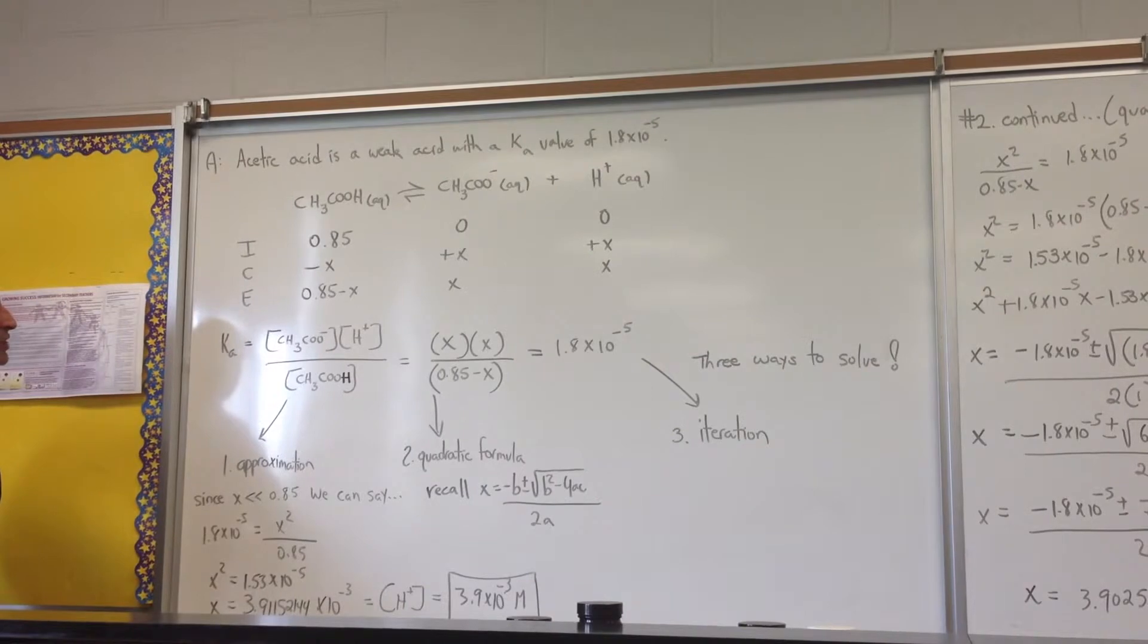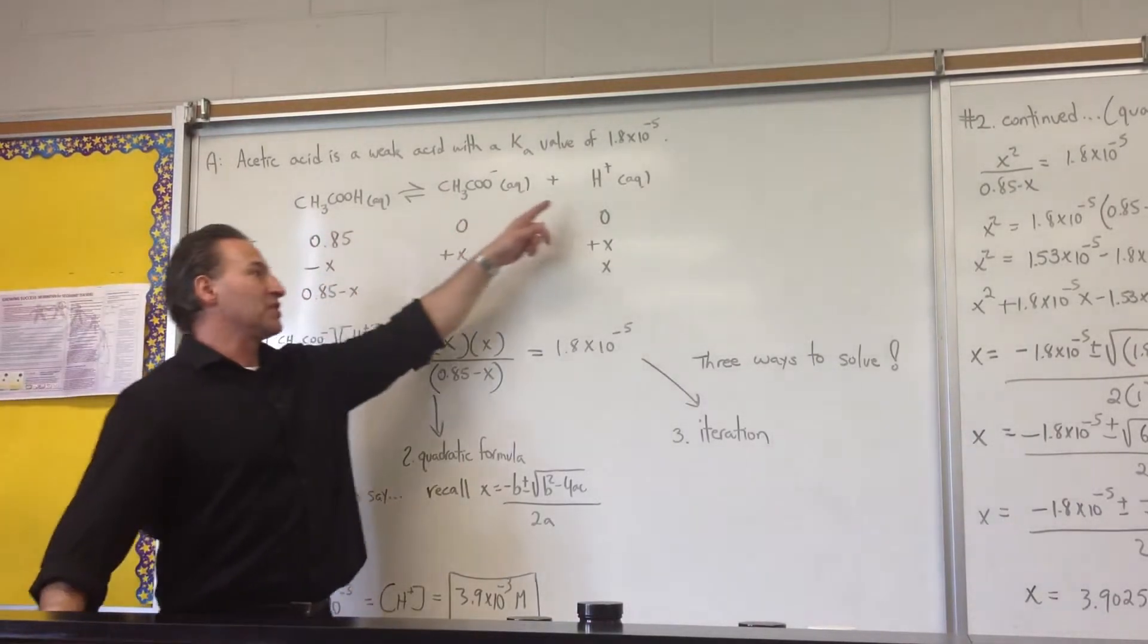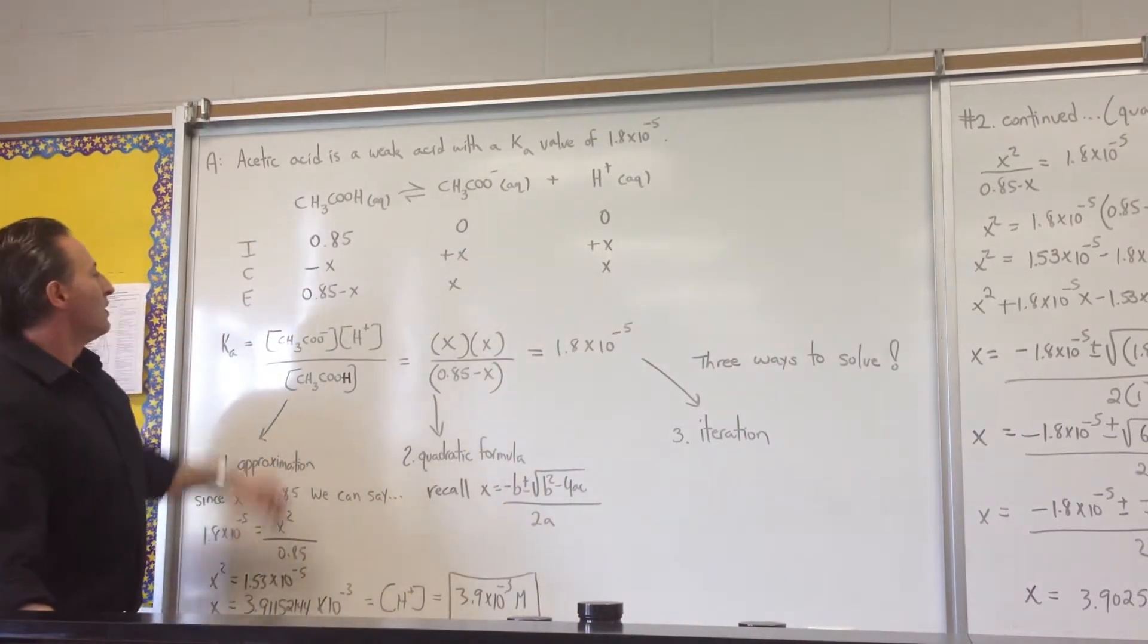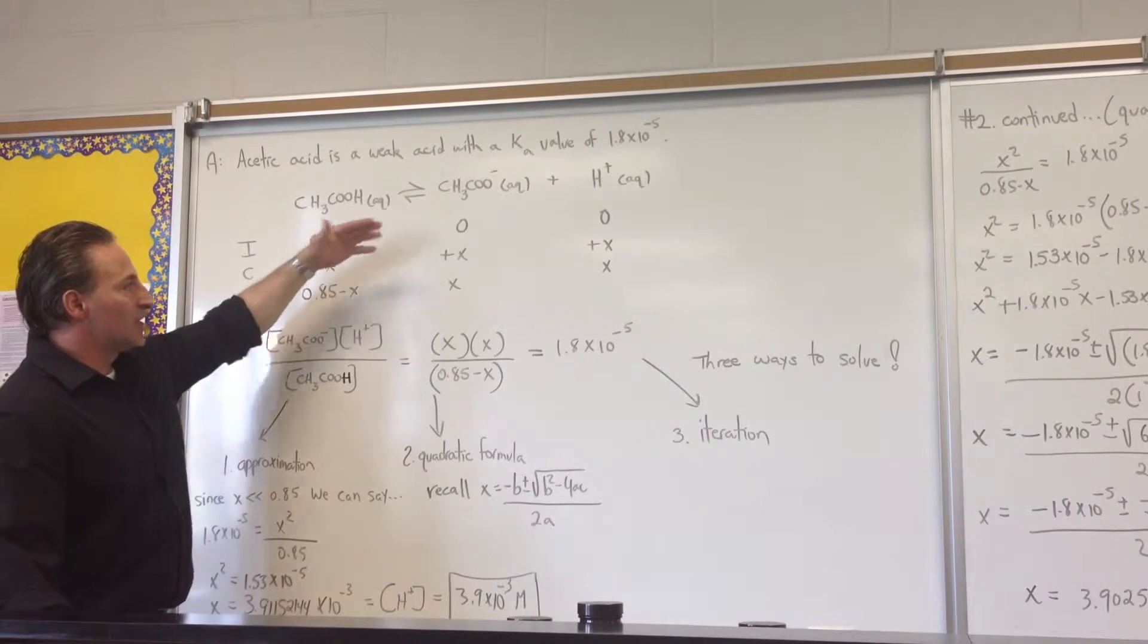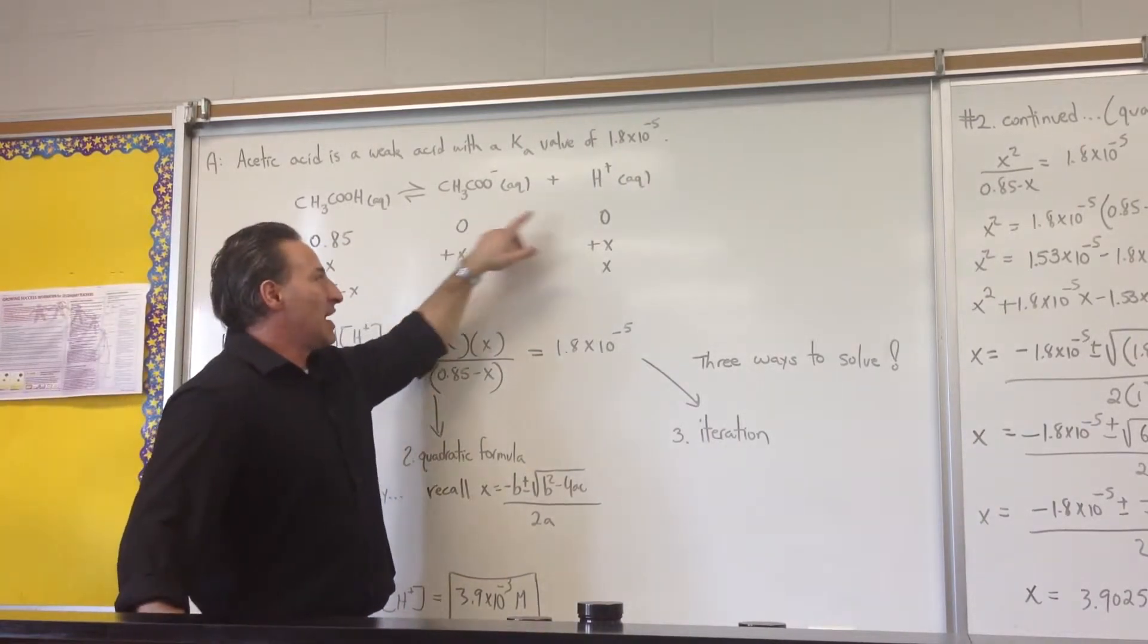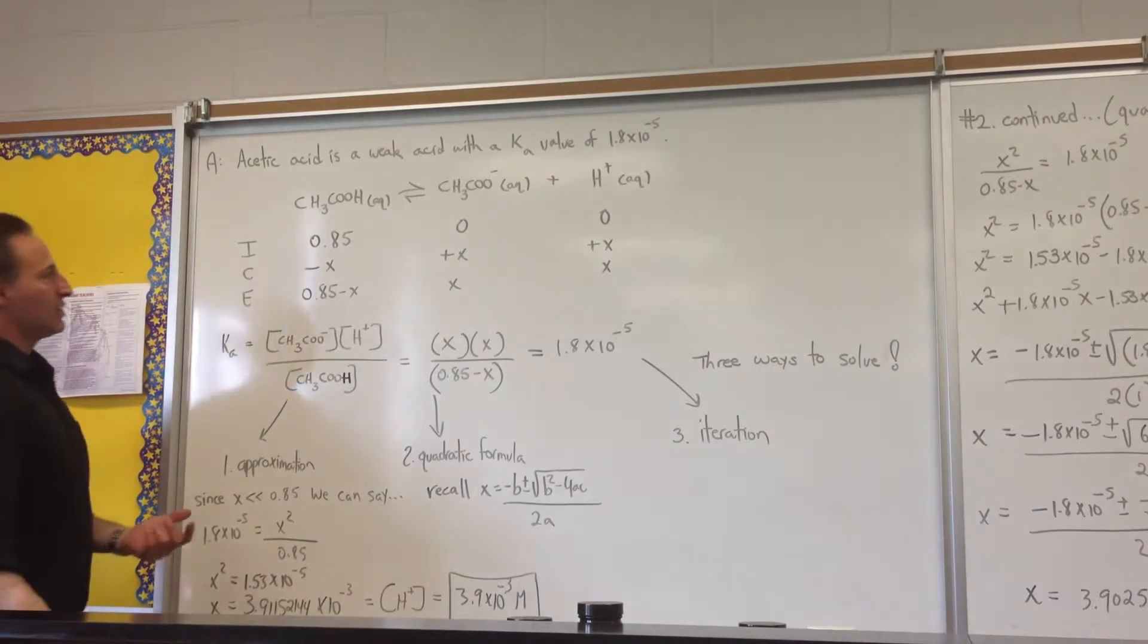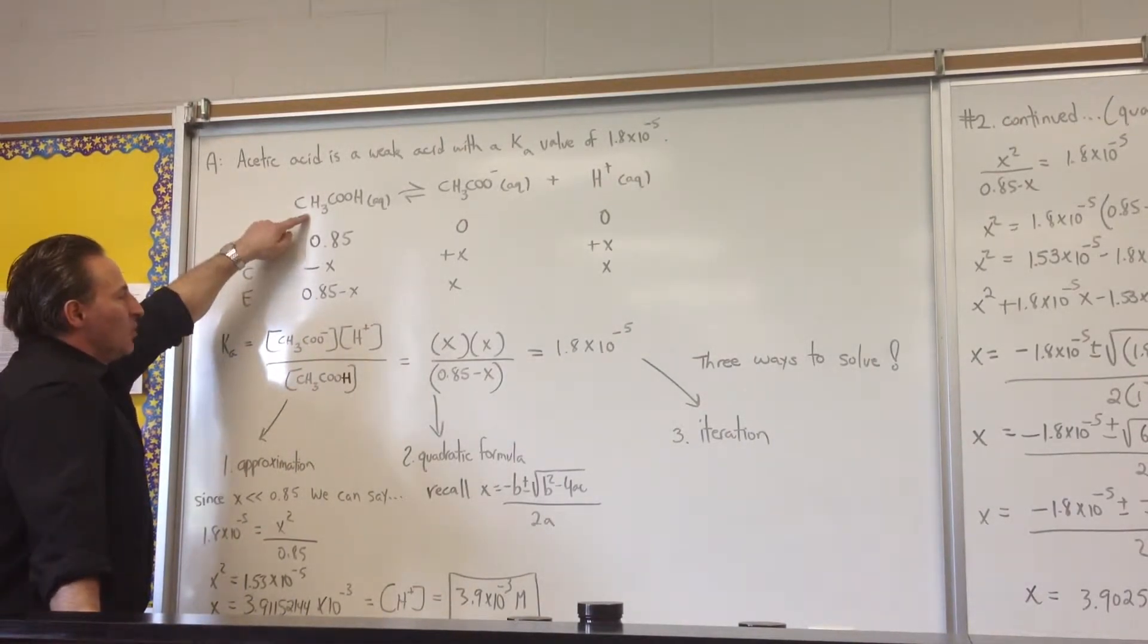In answer to the question, acetic acid is a weak acid with a Ka value of 1.8 times 10 to the minus 5. We've written out the equation that shows the dissociation of acetic acid into the acetate anion and the proton. The initial concentration of the acid is 0.85 molar. At the outset, we can say that there's zero acetate ion and zero protons.